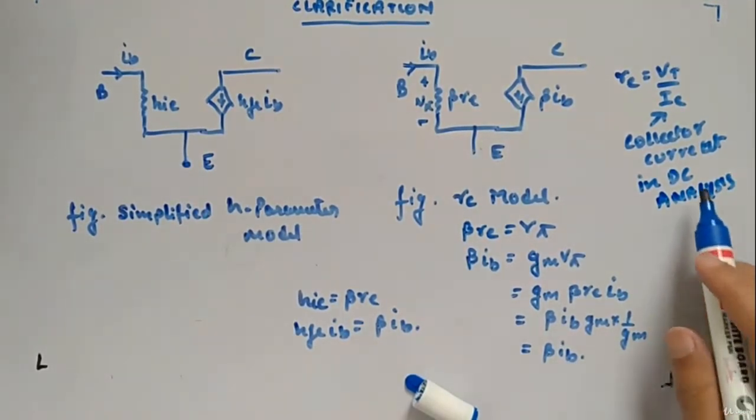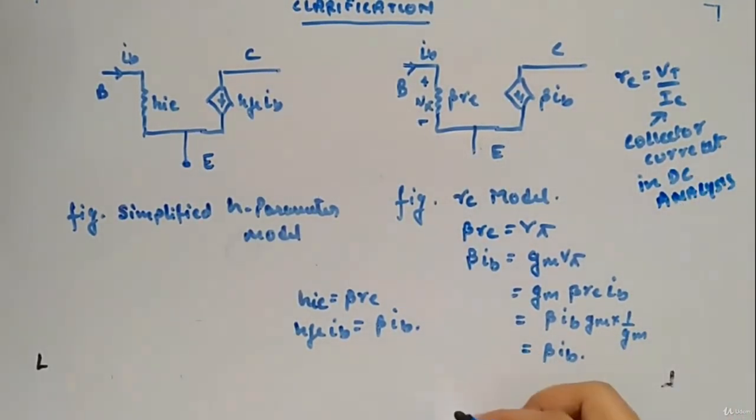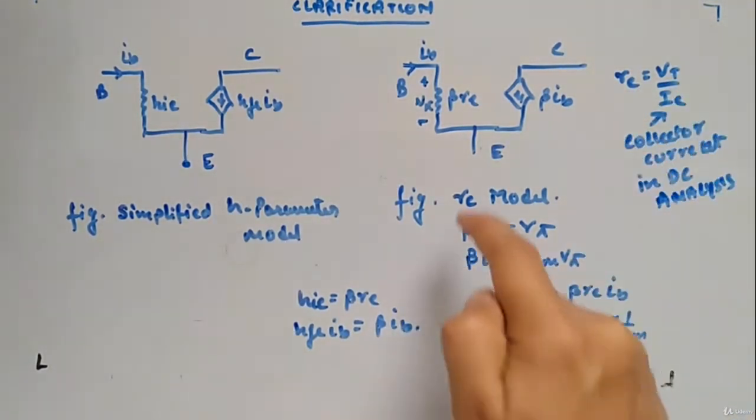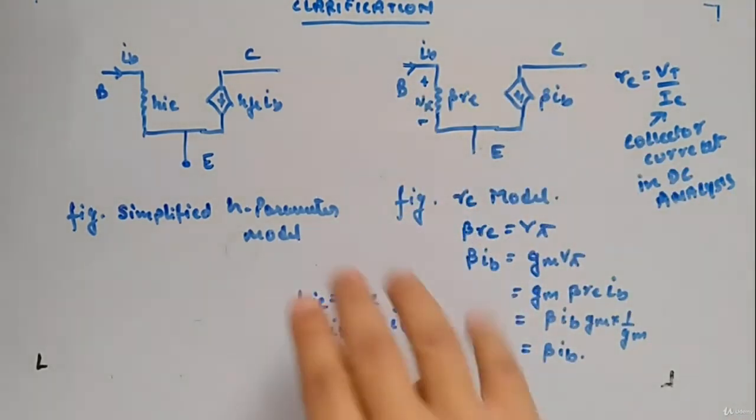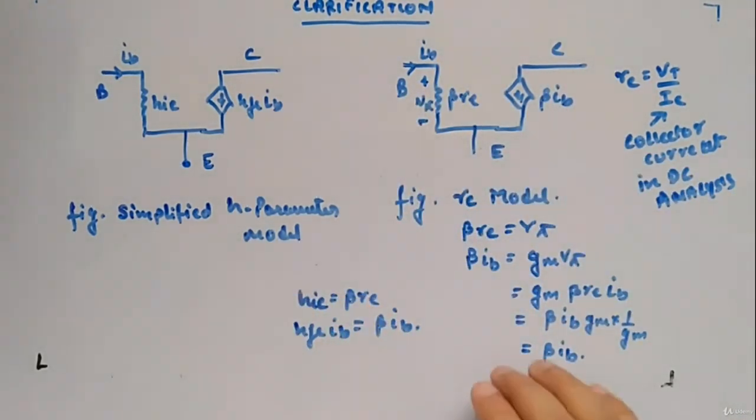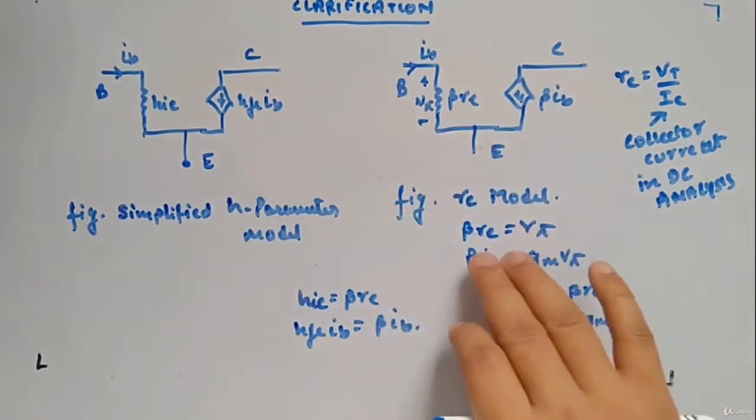It's the collector current you calculate in dc analysis. You divide it by vt and you will get re. So beta re, beta ib, ib emitter base collector. One more thing: beta re is sometimes written as rpi.